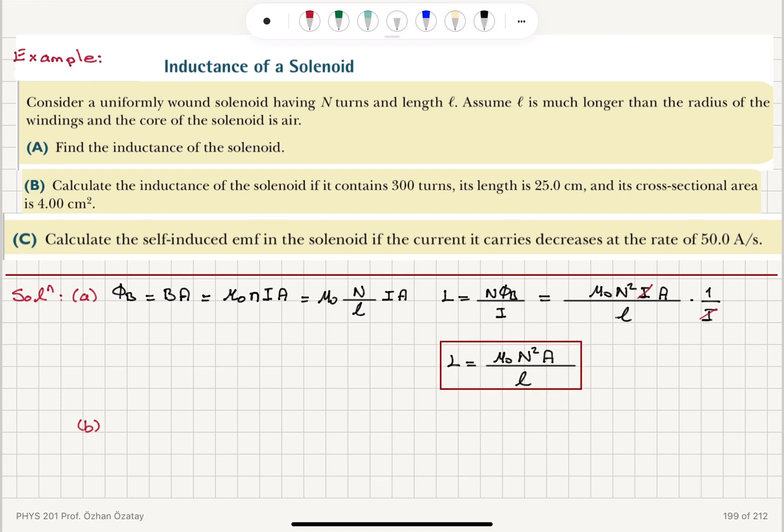So that's the answer to part A. And you can compare it to the parallel plate capacitor capacitance. Parallel plate capacitor capacitance was epsilon zero A divided by D. So in a way, this is similar mu zero A over L with another factor capital N squared.